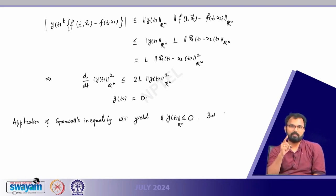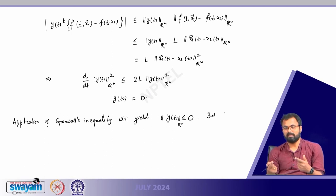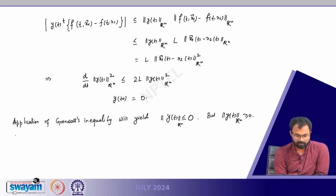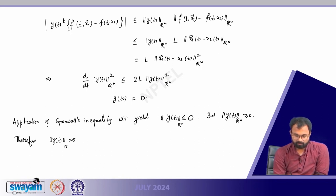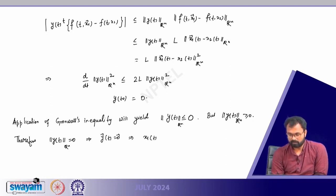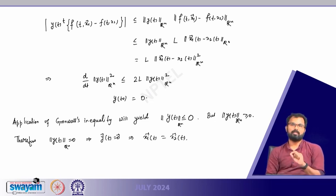But the norm is a positive quantity — since y(t)^T * y(t) = y_1^2 + y_2^2 + y_3^2 + ..., squares are non-negative and their sum is non-negative. So ||y(t)||_Rn ≥ 0. Therefore, ||y(t)|| must equal 0, which implies y(t) = 0, and therefore x_1(t) = x_2(t). This proves the solution exists uniquely. Lipschitz continuity assures us that the local solution exists uniquely — this is the essence of Picard-Lindelöf theorem.